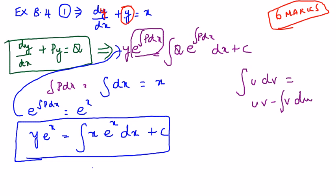So in this particular example, u equals x, therefore du is going to be, you differentiate it, it is going to be dx. Likewise, dv is going to be e^x dx.